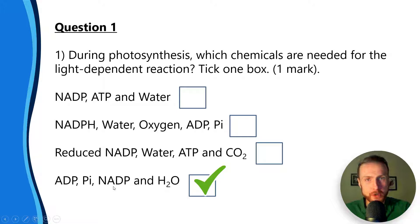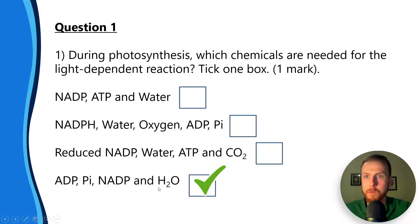Question two: an investigation into the change in photosynthesis in different levels of carbon dioxide was carried out. Results are to the right. We've got 1.5% carbon dioxide and 0.002% carbon dioxide.